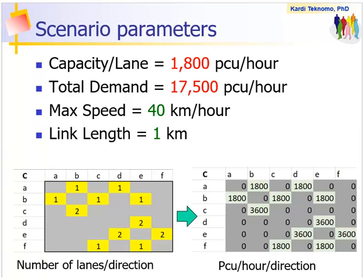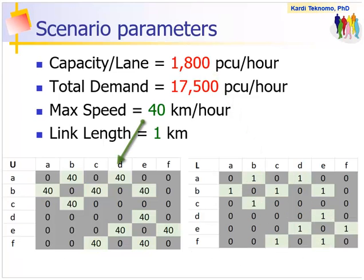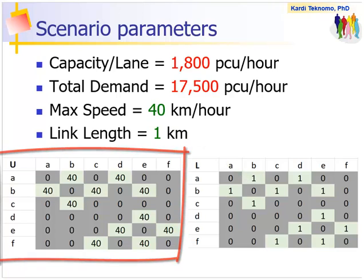In any science, we need to deal with the same unit. The capacity matrix in lane per direction can be converted into PCU per hour per direction by multiplying with the capacity per lane. One lane is 1,800 PCU per hour. Two lanes is 1,800 times two, which is 3,600 PCU per hour. The maximum speed and link length are assumed constant. Thus, if we put them into matrix, they are just the same as adjacency matrix times the scalar constant. U is the matrix of maximum speed and L is the matrix of link distance.